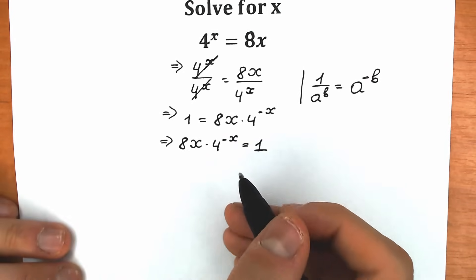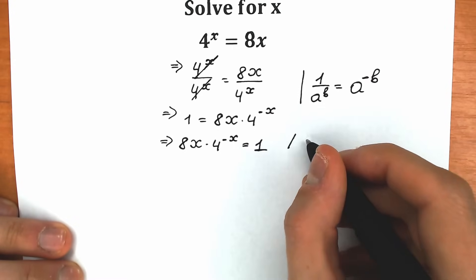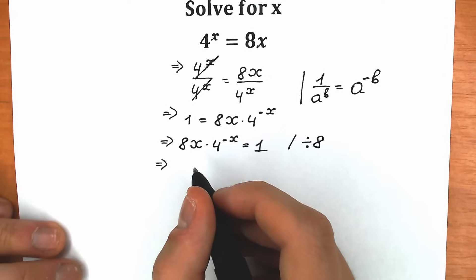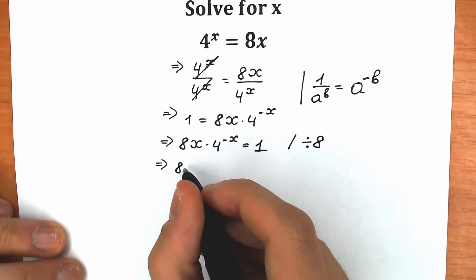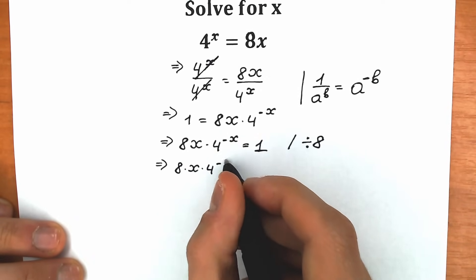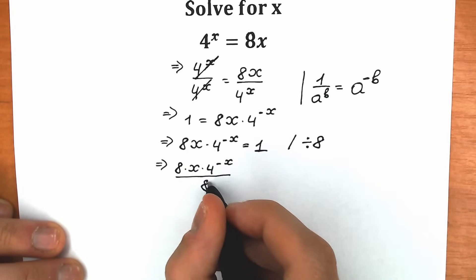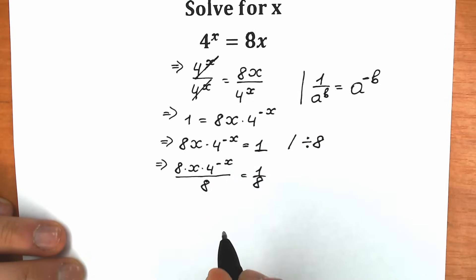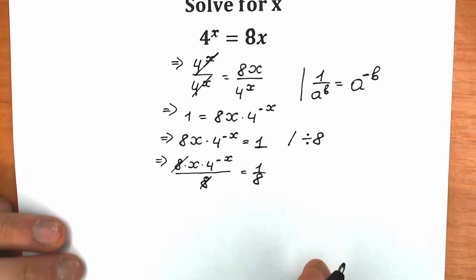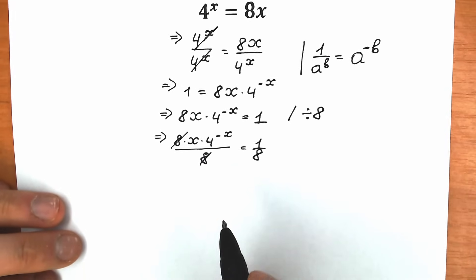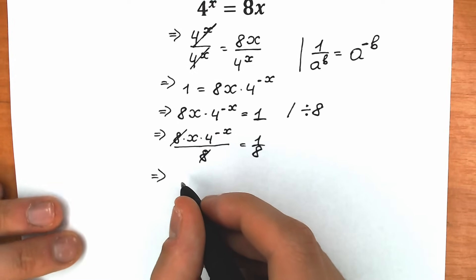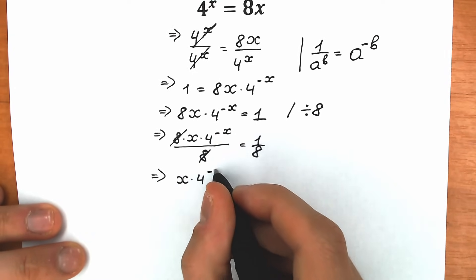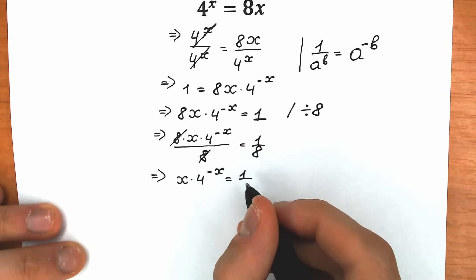Now let's divide both sides by 8. On the left side, we cancel the 8, and we get x times 4 to the power minus x equal to 1 over 8.